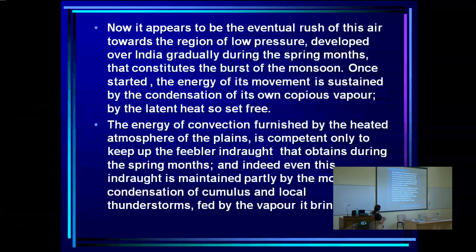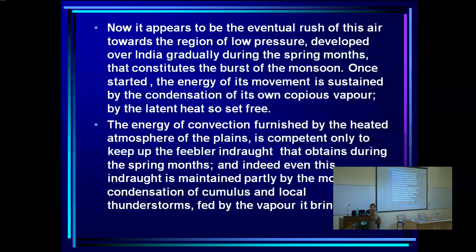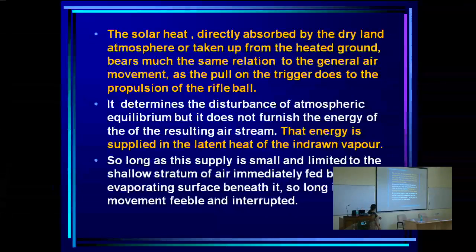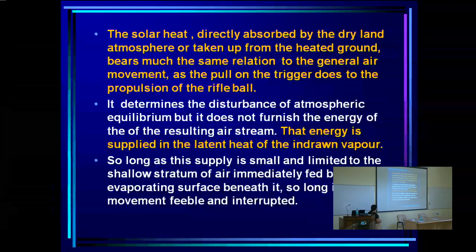Blanford writes that the energy of this movement is sustained by the condensation of copious vapor — by the latent heat set free. He says the energy of convection furnished by the heated atmosphere of the plains is only enough to keep up the feeble inroad that obtains during spring months — that is all land-ocean contrast can produce. Even that feeble inflow is maintained partly by the moderate condensation of cumulus and local thunderstorms. The solar heat directly absorbed by the dry land atmosphere 'bears much the same relation to the general air movement as the pull of the trigger to the propulsion of the rifle ball' — it determines the disturbance of equilibrium but does not furnish the energy. The energy is supplied by the latent heat of water vapor.